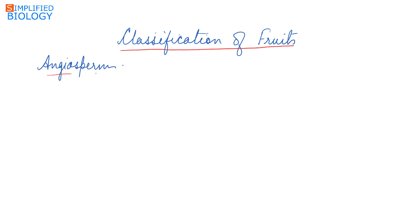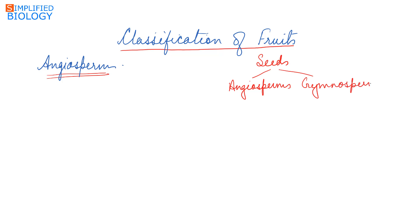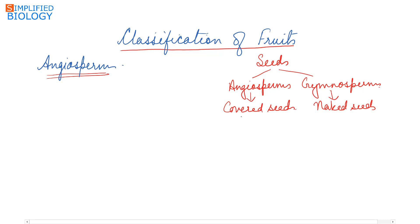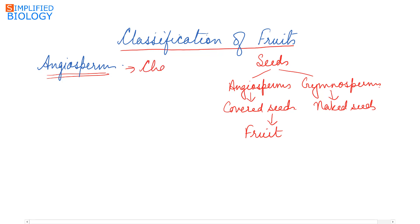Fruits are the characteristic of angiosperms. Seeds are present in both angiosperms and gymnosperms, where gymnosperms have naked seeds while angiosperms have covered seeds. In angiosperms, the seeds are present inside the fruit — it is the fruit that bears the seeds. So fruits are the characteristic of angiosperms.